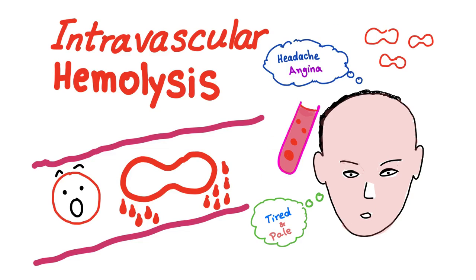Symptoms of anemia are the same: tired, pale, headache, dizziness, dyspnea on exertion, shortness of breath, fatigue, exercise intolerance, angina. You can hear a flow murmur with your stethoscope — the flow murmur is a systolic one. Diastolic murmurs are always bad.